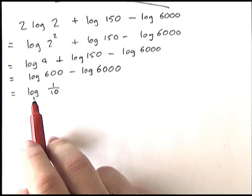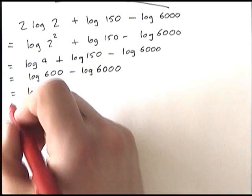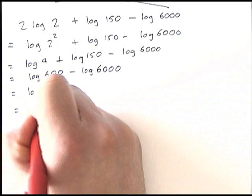As I said, this is log to base 10. So log to base 10 of 1 over 10, it just gives me a simple answer of minus 1.